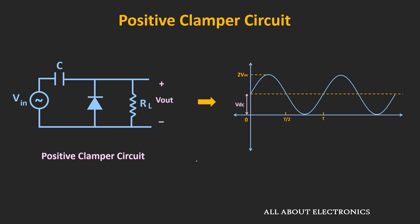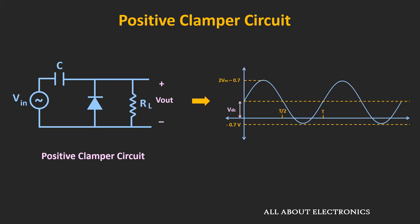If you see the ideal waveform, it would look like this. But due to the voltage drop across the diode, it won't behave like a perfect clamper circuit. If you see the actual waveform, it will look like this. This problem can be avoided by using the active clamper circuit.